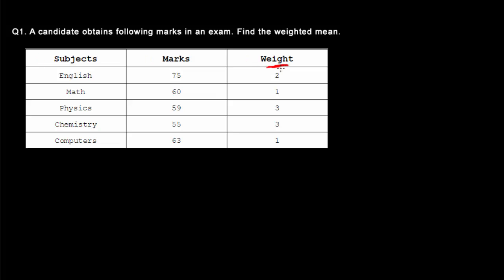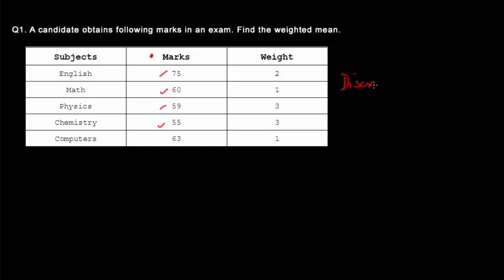If you look at this column weight, this is pretty much the same as frequency. Now if you look at this column marks, these values are pretty straightforward. For example in English the person gets 75. It's a straightforward value and we have known that if the values are straightforward then this frequency table is an example of discrete frequency distribution.